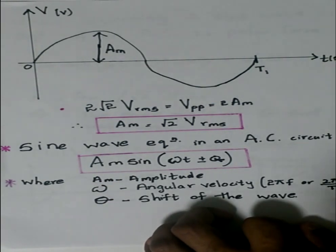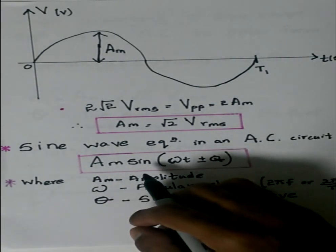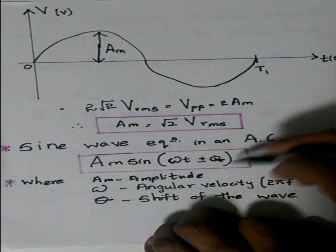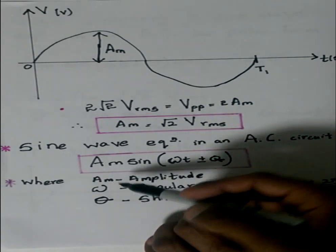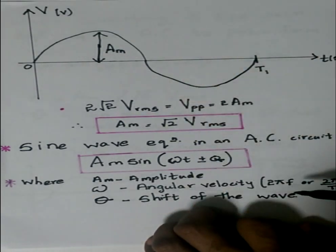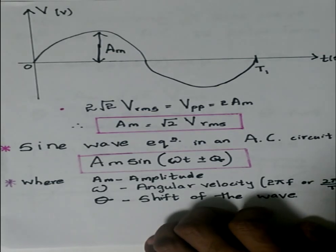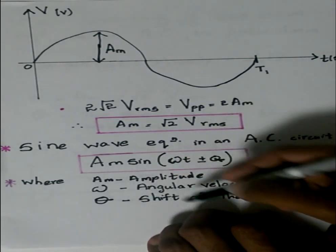We know that the general equation of a sine wave in an alternating current circuit is Am times sine(ωt ± θ), where Am is the amplitude as we know it, angular velocity is 2πf or 2π/T...